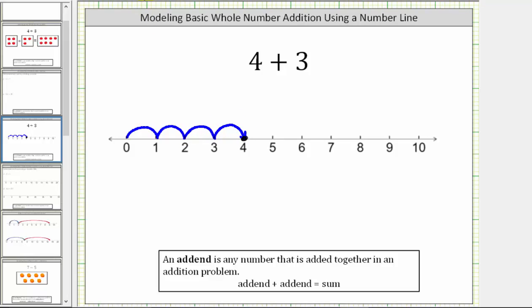And then because we have plus three from four, we move right three more units. So four plus one plus two plus three, and we can see the sum is seven. Four plus three equals seven. We can also think of this as four increased by three is seven.